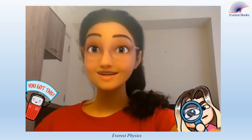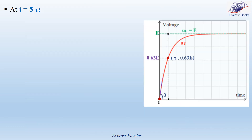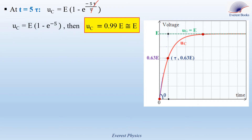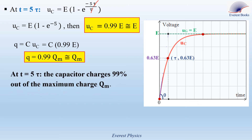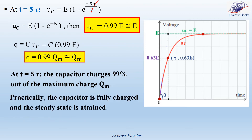Focus — this is important. At time equal 5 tau, replacing T by 5 tau in the expression of UC gives E times (1 minus exponential of minus 5), which equals 0.99E, approximately equal to E. Q equals C times UC; replacing UC by 0.99E and noting CE equals QM gives Q equals 0.99QM, approximately equal to QM. We conclude that at time equal 5 tau, the capacitor has charged 99% of the maximum charge QM, and practically the capacitor is fully charged and the steady state is attained.